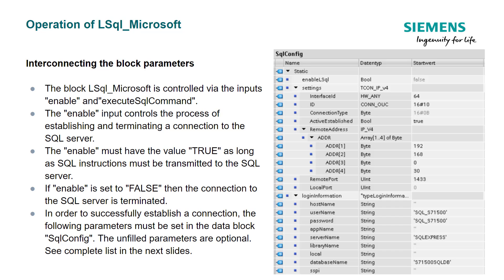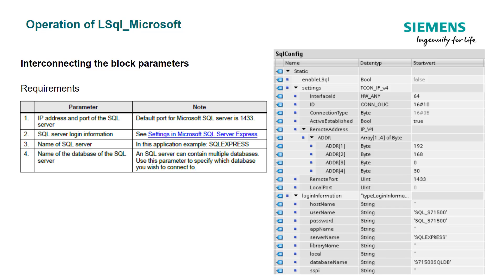The block LSQL Microsoft is controlled via the inputs enable and execute SQL command. The enable input controls the process of establishing and terminating a connection to the SQL server. Enable must have the value true as long as the SQL instruction must be transmitted. If enable is set to false, the connection to the SQL server is terminated. To successfully establish a connection, the following parameters must be set in the data block SQL config. These include the IP address and the port of the SQL server — the default port for Microsoft SQL Server is 1433.